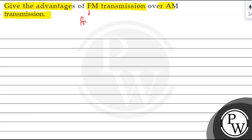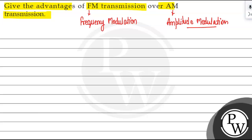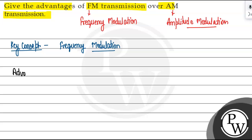FM stands for Frequency Modulation, and AM stands for Amplitude Modulation. The key concept we are using here is Frequency Modulation. Frequency Modulation is that modulation in which we change the frequency, and Amplitude Modulation is that modulation in which we change the amplitude of the carrier wave.